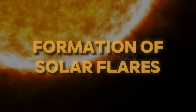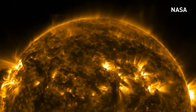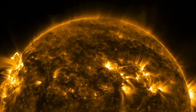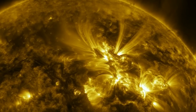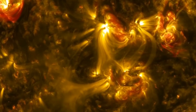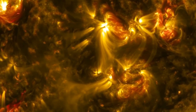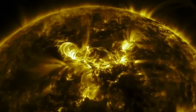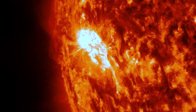The formation process begins deep within the Sun's convective zone, where dynamic movements create twisted magnetic field lines. These lines stretch upward, poking through the Sun's surface and into the corona. Here, they can become tangled, and with enough tension, these tangles can suddenly snap and realign, releasing energy in what we observe as a solar flare.